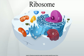Prokaryotes have 70S ribosomes, each consisting of a small and a large subunit. Their small subunit has a 16S rRNA subunit consisting of 1540 nucleotides, bound to 21 proteins. The large subunit is composed of a 5S rRNA subunit (120 nucleotides), a 23S rRNA subunit (2900 nucleotides), and 31 proteins.